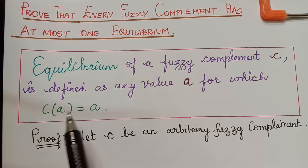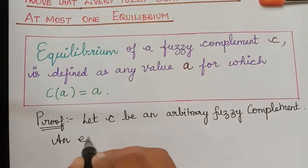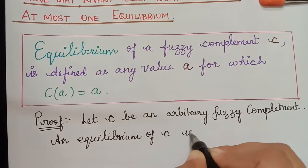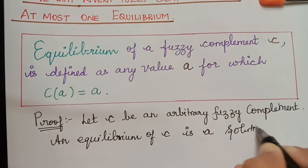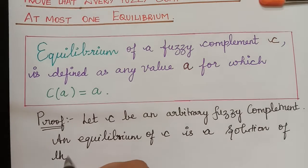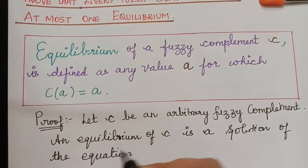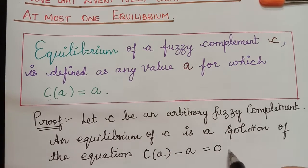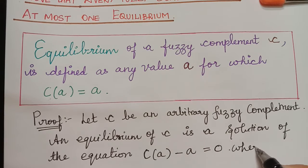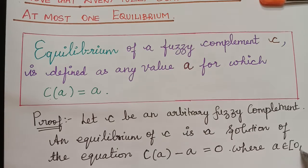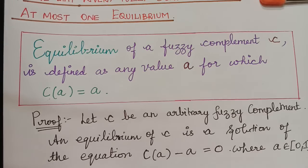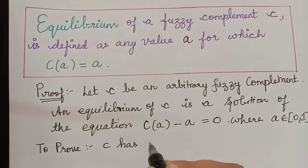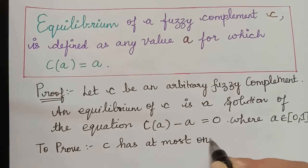That is, C of A minus A equal to 0. So an equilibrium of C is a solution of the equation C of A minus A equal to 0, where A is an element of the closed interval [0, 1]. And now we have to prove that C has at most one equilibrium.